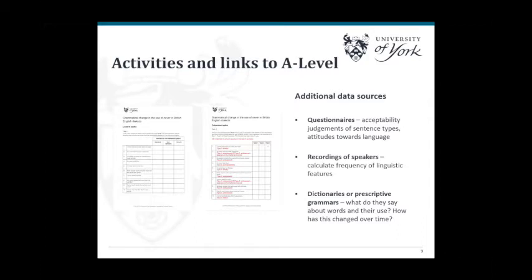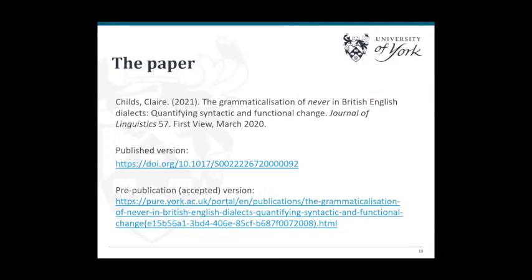In terms of additional resources: if you have students wanting to do projects on language variation or language change, you might be able to use the questionnaires in the activities and develop those. They ask speakers to give acceptability judgements, but you can use any kinds of sentences — you don't have to just focus on 'never.' You may also be able to adapt them to studies of language attitudes. If you're interested in how people actually use language, you might find recordings online and calculate the frequency of linguistic features in their speech. And for the historical aspect, you might look at dictionaries, prescriptive grammars or online resources like the Oxford English Dictionary. Thank you very much, everybody.